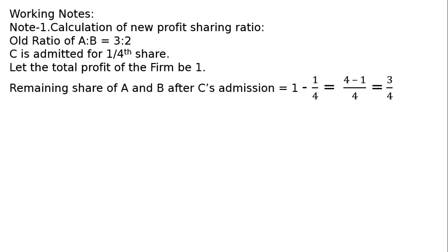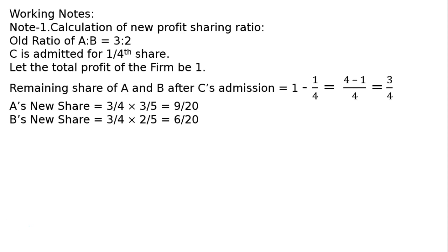This 3 upon 4 will be divided between A and B in 3 is to 2. So A's share becomes 3/5 and B's share becomes 2/5, giving 9 by 20 and 6 by 20. The question is silent about further sharing between A and B, so we keep 3 by 5 and 2 by 5, and C's share is one-fourth, which we make equivalent to 5 upon 20.